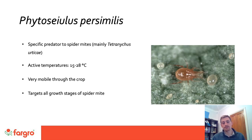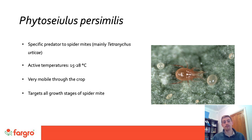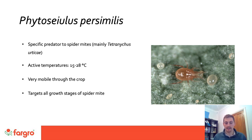Looking at Phytoseiulus: this is really the go-to predator for spider mites as it is a very voracious predator that targets spider mites specifically — most notably two-spotted spider mites. If you've got a heated environment that stays above 15 degrees, then this is definitely your best option for control. It's very mobile through the crop so you can treat hot spot areas, and once it has used up all of its food source of spider mites it will venture through the crop and target other colonies that you might not have seen.